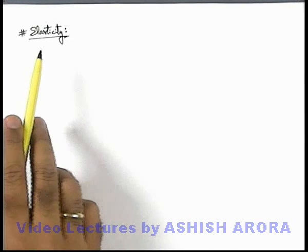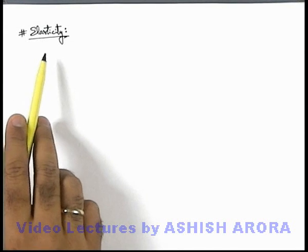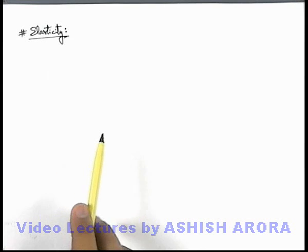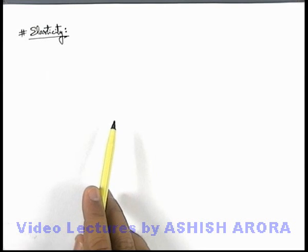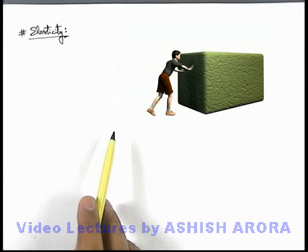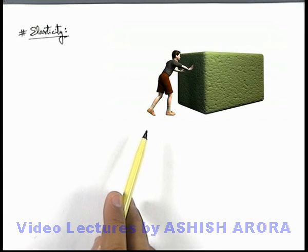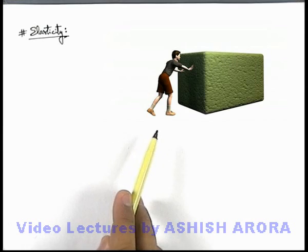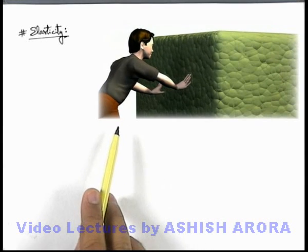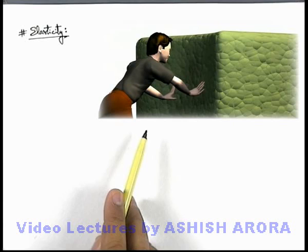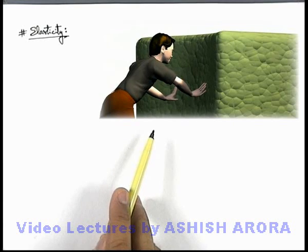Let's start the topic of elasticity. To understand elasticity, let's first take an experimental illustration. Here you can see there is a boy in front of a large block made up of rubber, clamped on the ground. In this situation, we can see when the boy pushes the rubber block with his hand, the block gets deformed.